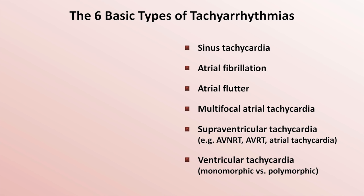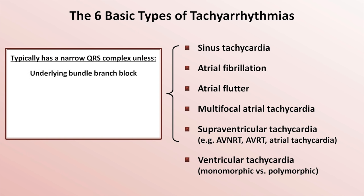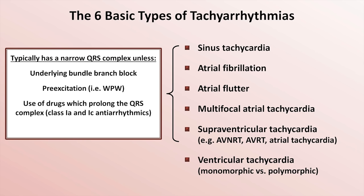The first five rhythms on this list typically have a narrow QRS complex, unless one of the following is present: an underlying bundle branch block; pre-excitation, a condition in which a patient has an abnormal bundle of conductive tissue connecting the atria and ventricles bypassing the AV node — often used synonymously with Wolff-Parkinson-White or WPW syndrome; use of drugs which prolong the QRS complex, most notably class 1A and 1C antiarrhythmics such as procainamide and flecainide, respectively; and finally, profound hyperkalemia.